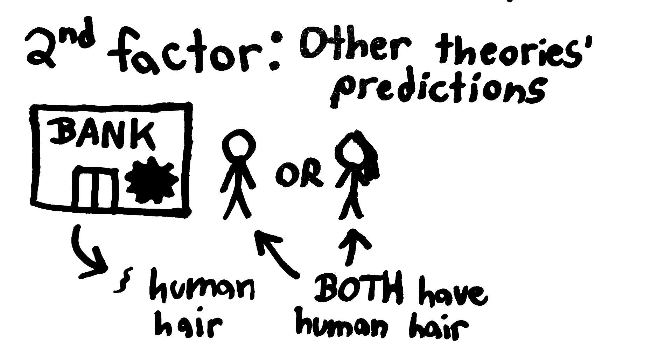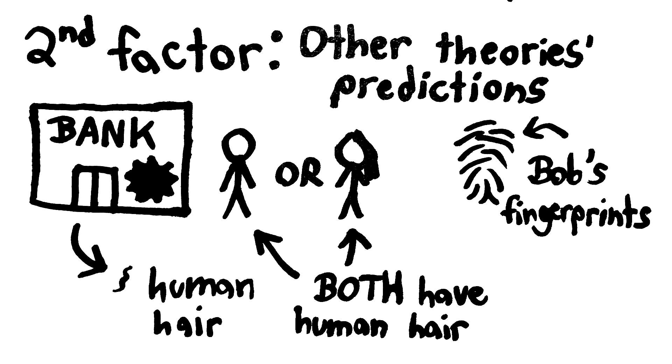because they did an equally good job at making this prediction. But if we found Bob's fingerprints at the crime scene, that is something that is predicted strongly by Bob robbing the bank, but not predicted by Alice robbing the bank.